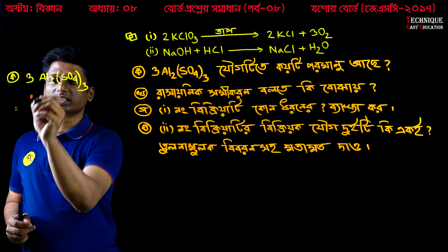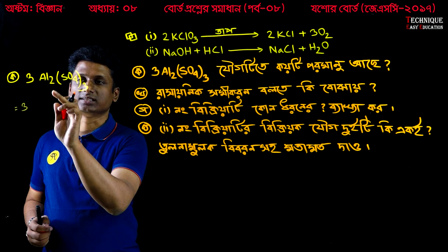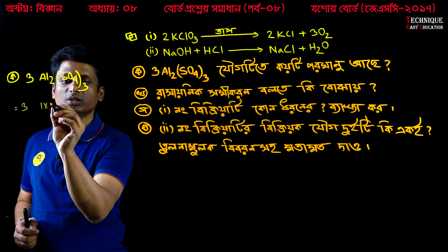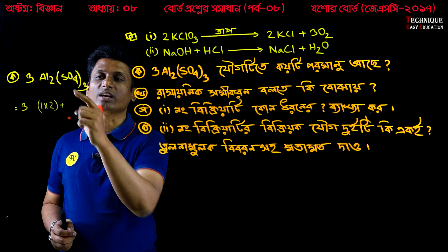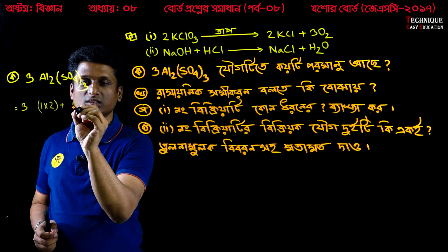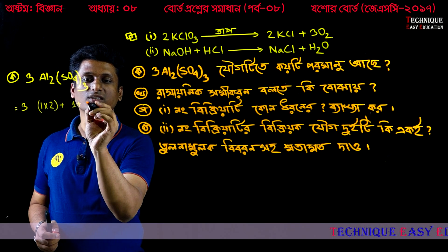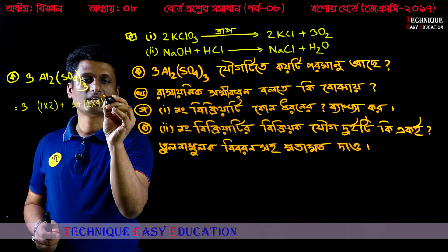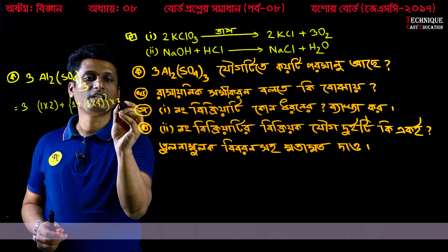Here we have 3. What do we have to do? Here we have 3, and this is 2. So here we have to do 1 into 2, which gives 2. Here we have 1 bracket plus. Then here we have to do 2. Sulphur is active, so 1 plus. Here we have oxygen — oxygen is active — so 1 into 4. What do we have to do? First bracket, then here we have to do 2 brackets, 3 times.